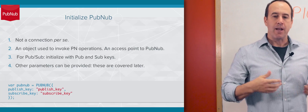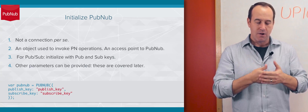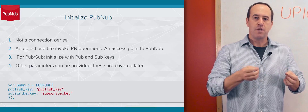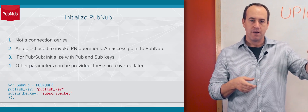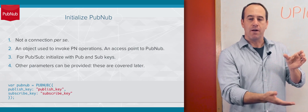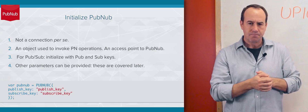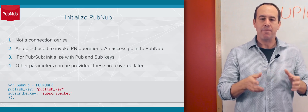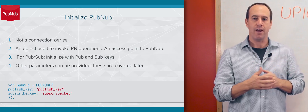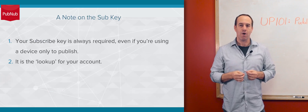When it comes to publish and subscribe, a very simple example of how to get started is you initialize PubNub with your PubNub keys — using the publish and subscribe keys in the initialization call. There are other parameters for more advanced use cases, but at a very basic level, you must supply your subscriber key. That is the lookup for your account.